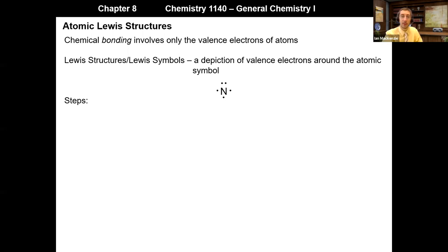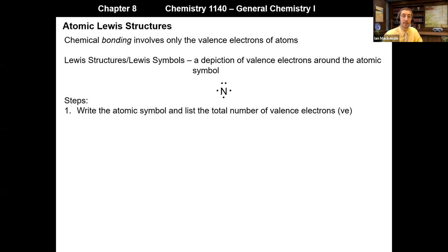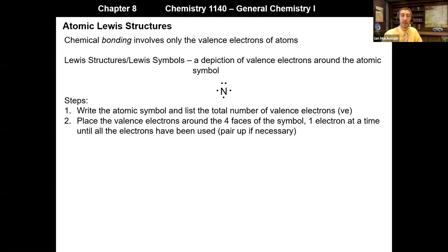How do we go about writing these? The first step is to write the atomic symbol and list the total number of valence electrons, which we'll sometimes refer to as VE. So we write N and note that we have five valence electrons. Then we place the valence electrons around the four faces of the symbol, one at a time, until all of the electrons have been used up. We start on any face and go around the symbol — it doesn't matter if we go clockwise or counterclockwise. We fill in each face before we pair up any valence electrons.